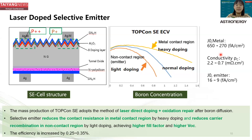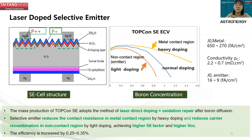Besides the wafer dimension, we also improve our TOPCon cell structure. We adopt laser doped selective emitter technology, which enables heavy doping at the metal contact region and light doping at the non-contact region. By doing so, we can reduce the J0 metal and J0 emitter while improving conductivity. As a result, we can increase the fill factor and VOC, improving efficiency by 0.25 to 0.35%.